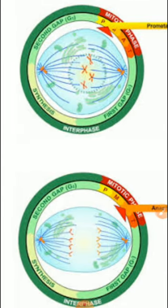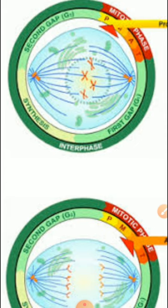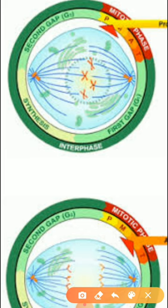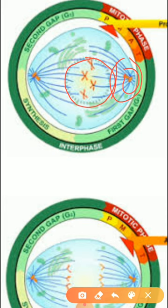Next, we can discuss late prophase. During late prophase, spindle fibers appear around the centrioles. These are the spindle fibers — they appear around the centriole. Next, the nuclear membrane and nucleolus will disappear from the cell. So in late prophase: spindle fibers appear around the centrioles, and the nuclear membrane and nucleolus disappear.